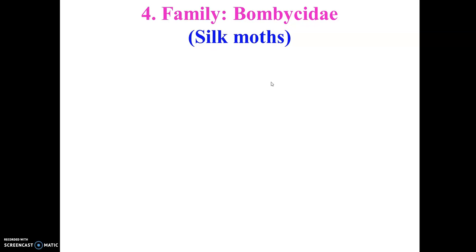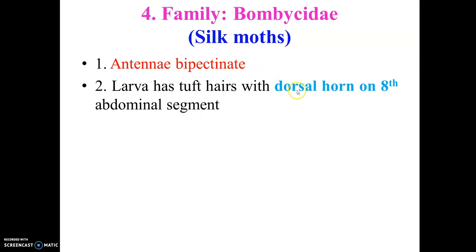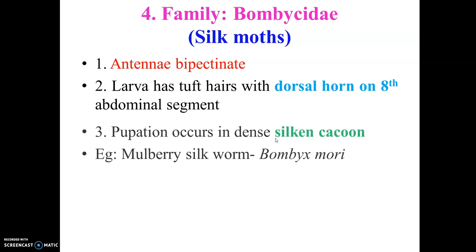The last family is Bombycidae, with the common name silk moth or silkworm. The antennae are bipectinate, which is a very important character. Just like in Sphingidae, there is a dorsal horn on the eighth abdominal segment. Pupation is very peculiar — it takes place in a cocoon made up of natural silk, produced by the modified lateral pharyngeal glands. This natural silk is very useful to human beings.